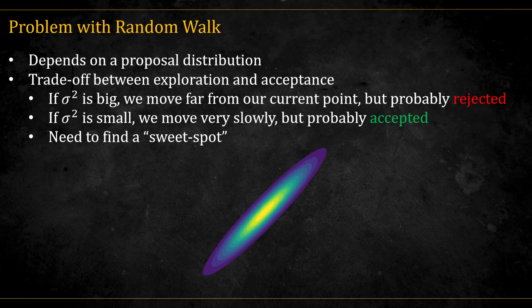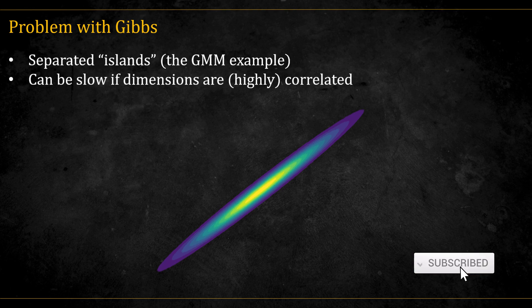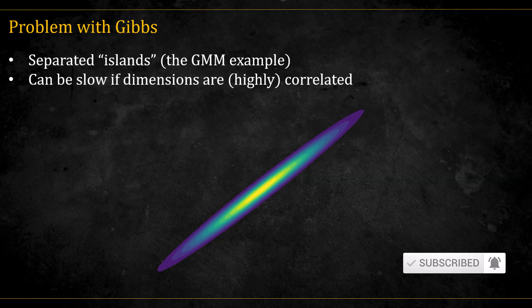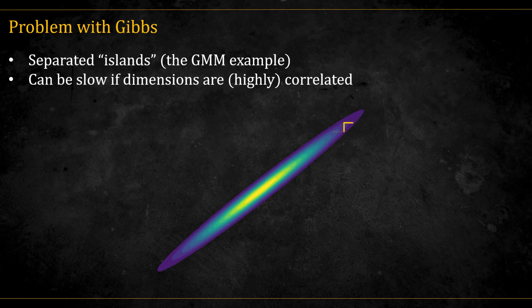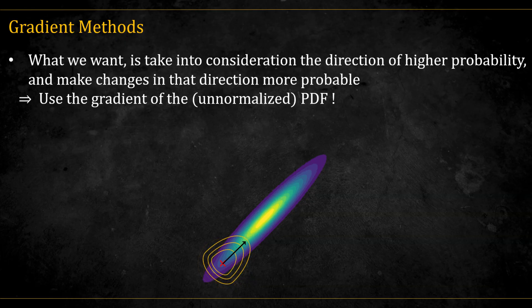What I've shown you here is in 2D. In higher dimensions, this problem only gets worse. We also saw the Gibbs algorithm, which takes steps according to the conditionals in an axis-aligned fashion. We saw that here we have several problems, for example if we have separated islands of probability. But Gibbs can also be very slow to traverse narrow regions of probability, at least when they are not axis-aligned.